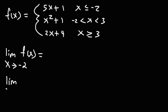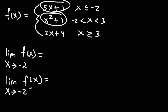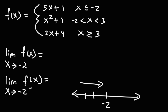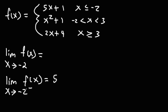Well, let's check the left-sided limit and the right-sided limit as well. As we approach negative 2 from the left, which part of the piecewise function should we use — 5x plus 1 or x squared plus 1? If we use a number line and approach negative 2 from the left, we pick values less than negative 2, like negative 3 or negative 4. That incorporates values less than negative 2, so we use 5x plus 1. Replacing x with negative 2: 5 times negative 2 plus 1 equals negative 10 plus 1, which is negative 9.